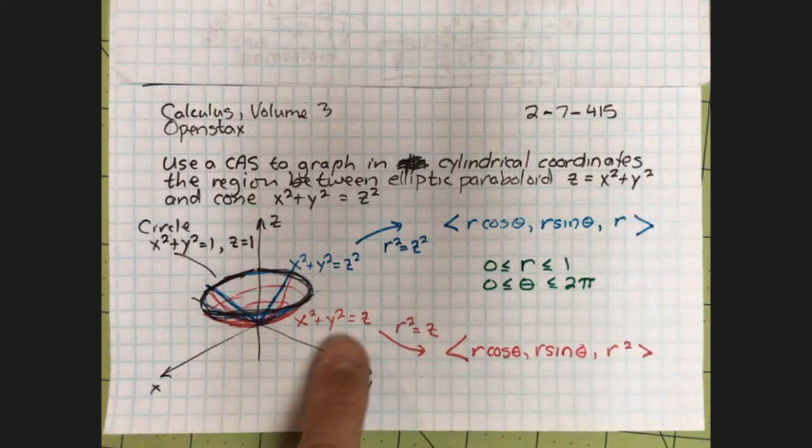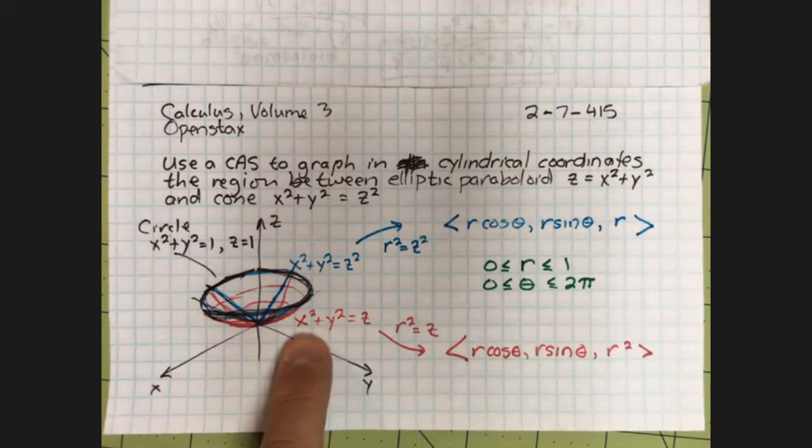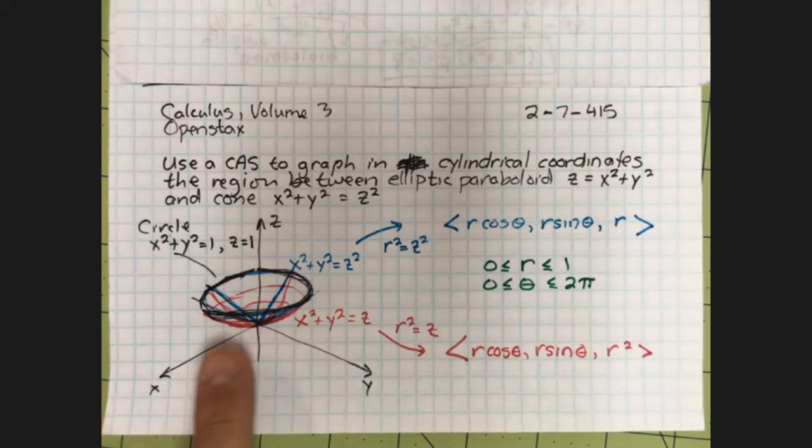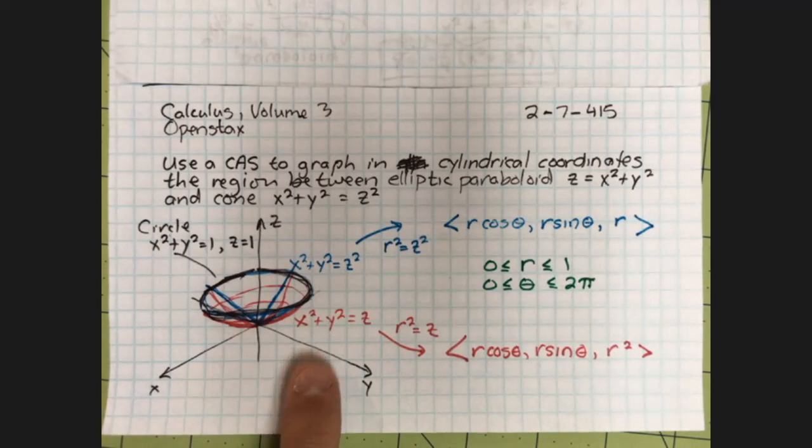This is a bowl, and if x is 0, z equals y squared, if y is 0, z equals x squared. These are parabolas, cross-sections, like a parabola spun about the z-axis, a basic paraboloid.